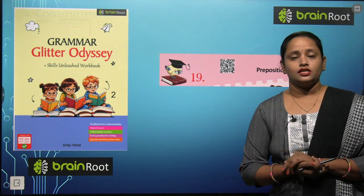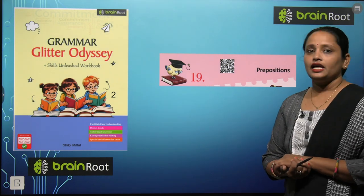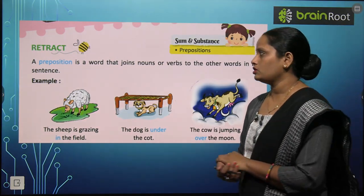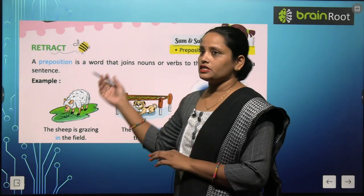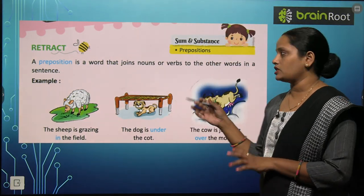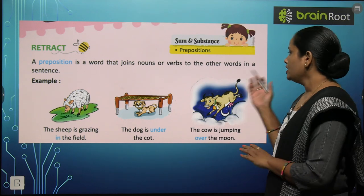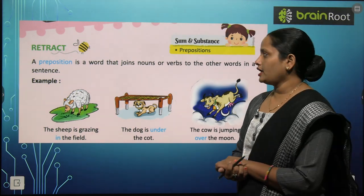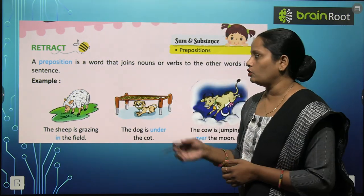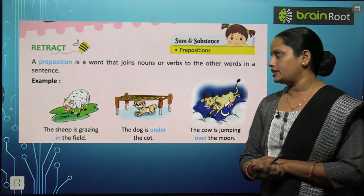So do you know what are prepositions? These are the words that tell about the position of a noun. A preposition is a word that joins nouns or verbs to their other words in sentences. Ye aise words hain jo noun ya phir verb ko join karte hain dusare words se ek sentence mein.